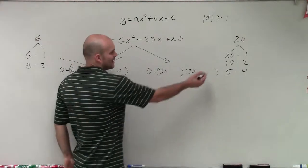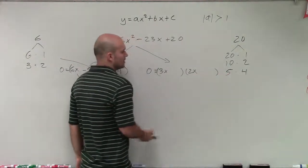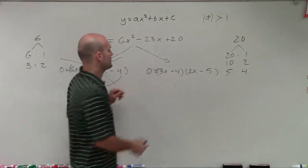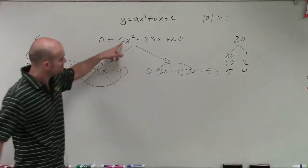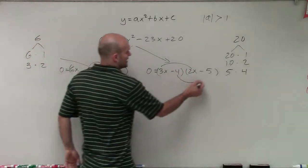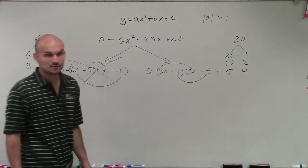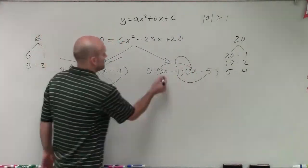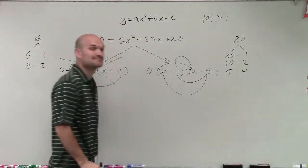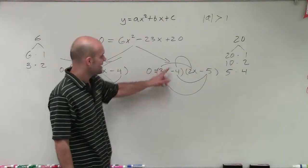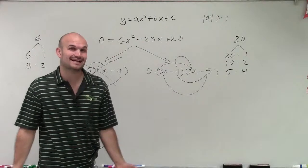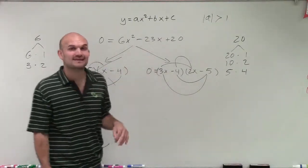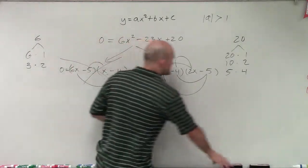Let's go and work with 5 and 4. What if I put a negative 5 here and a negative 4 there? We know 3x times 2x gives us 6x squared. Negative 4 times negative 5 gives us positive 20. Now let's check the middle terms: negative 4 times 2x is negative 8x, and 3x times negative 5 is negative 15x. Negative 15x minus 8x is negative 23x. There we go — we found our solution.